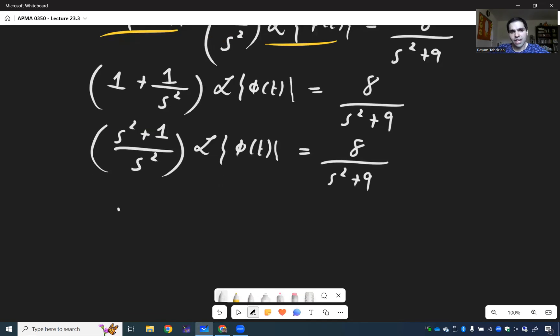So ℒ{φ(t)} is 8s² over (s² + 1)(s² + 9). Now, by the way, notice how cool this is.